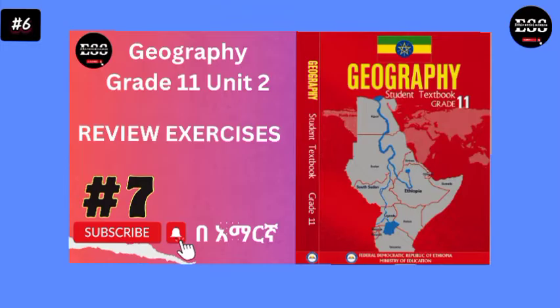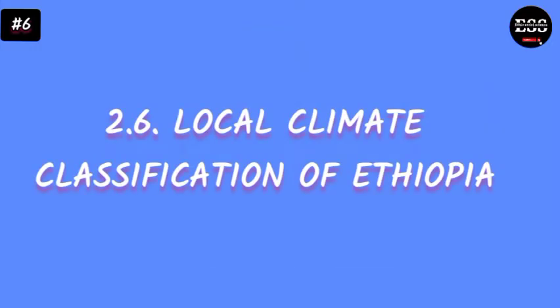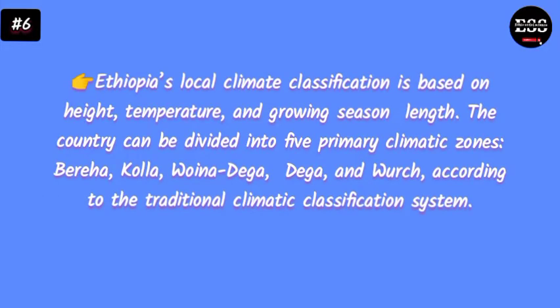We are covering exercises on 2.6 local climate classifications of Ethiopia. Ethiopia's local climate classification is based on altitude, temperature, and growing season. The country can be divided into 5 primary climate zones according to the traditional climate classifications.